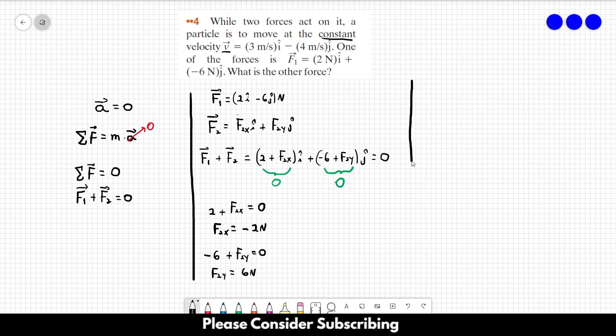So we can write F2 as a vector. F2 would be equal to minus 2 in the I direction plus 6 in the J direction. And don't forget to include the unit, which is newtons.